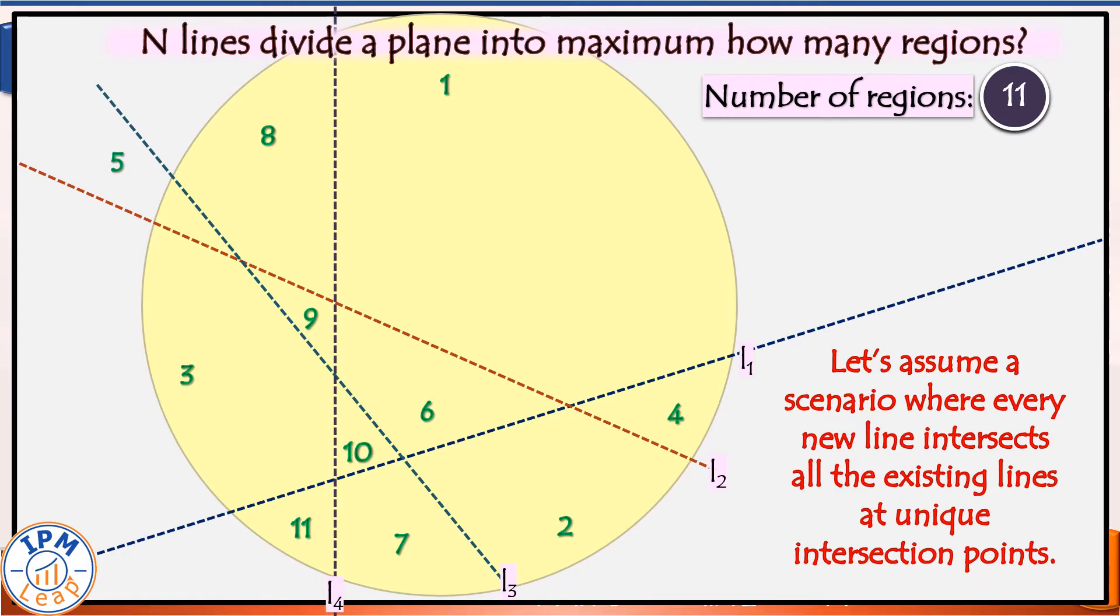the fourth line passes through these four regions, dividing each into two parts, thereby increasing four more regions in this plane. The total number of regions now is 7 plus 4, which is 11.